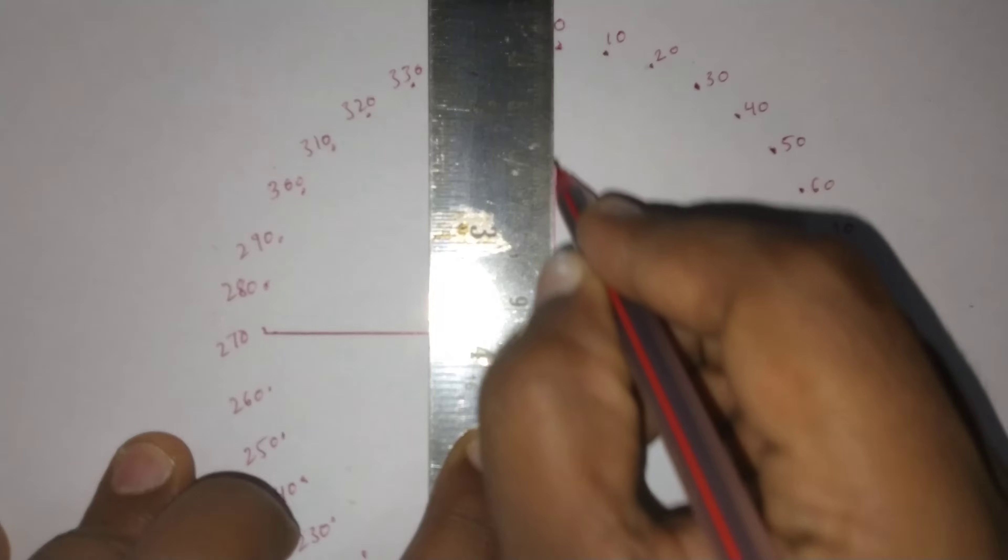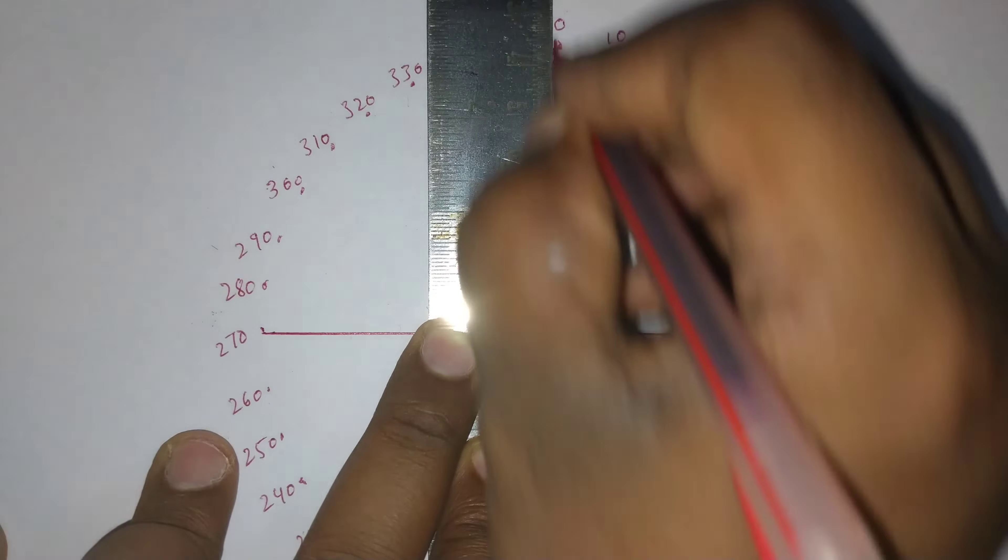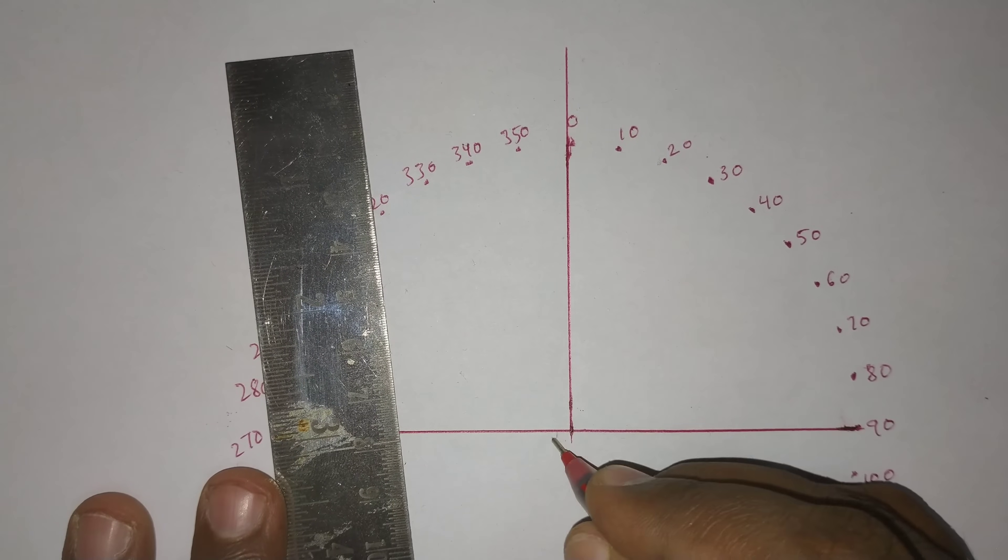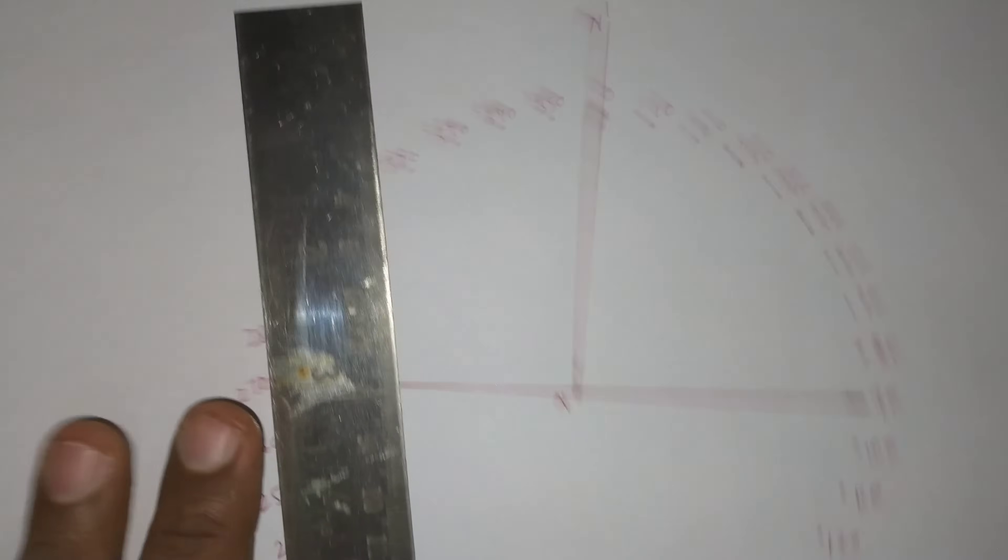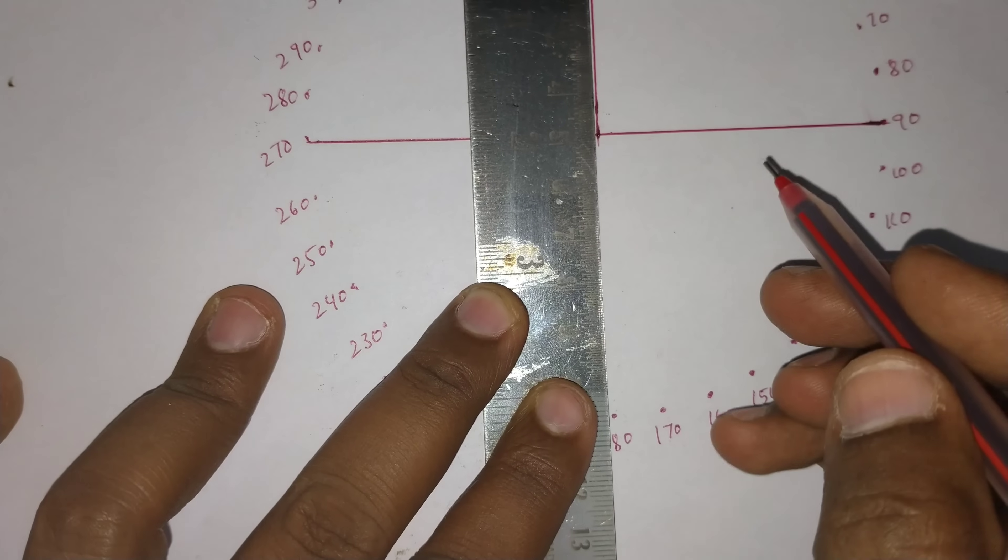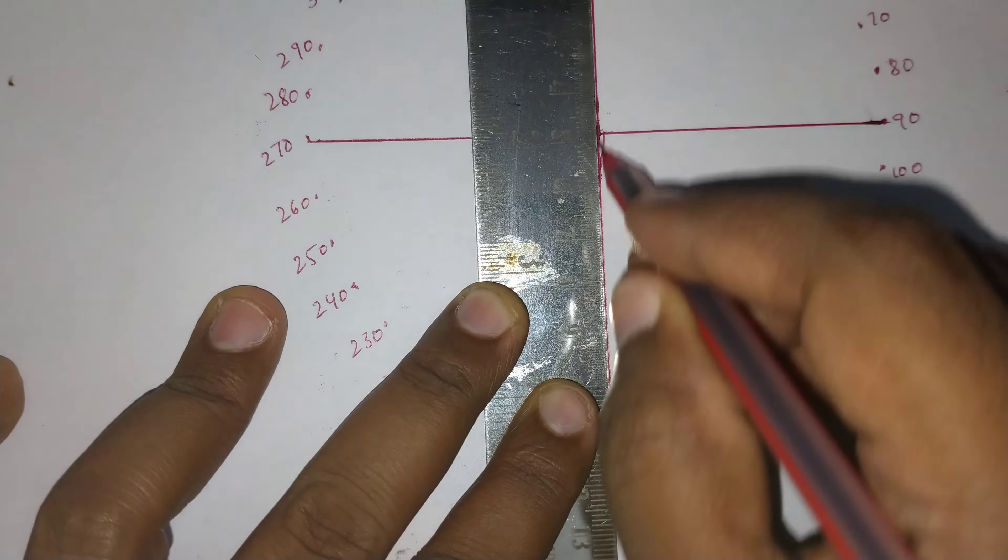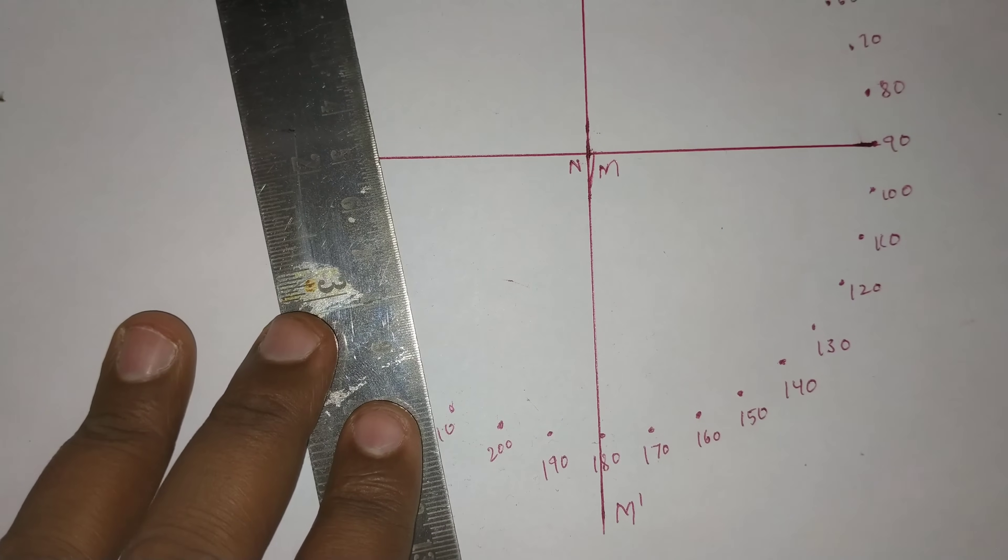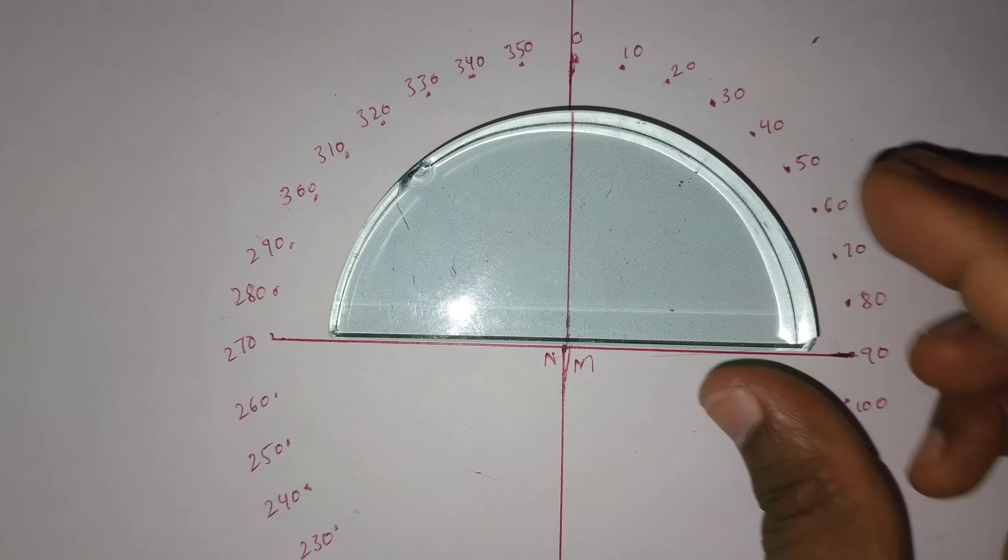I am drawing a normal here at the zero degree. This is a normal. I am naming it as N and N dash. And down, also consider a normal. I am naming it as M dash. So these two are the normals now.